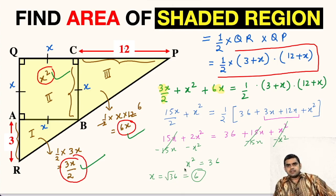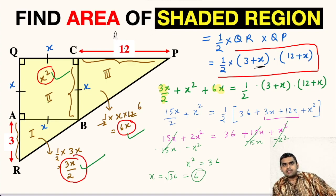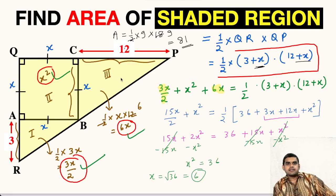After getting the value of X, we can substitute it here. The area of the shaded region will be equal to half times 3 plus X, that means 3 plus 6, 9, multiplied with 12 plus X, that means 12 plus 6 is 18. 9 times 9 is 81. So the area of this shaded region will be 81 square units.